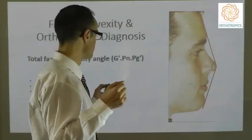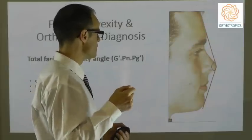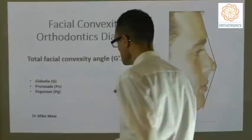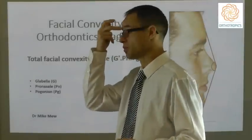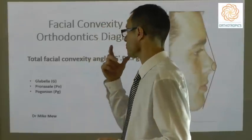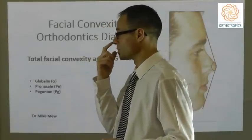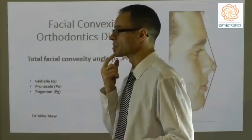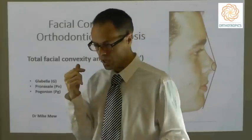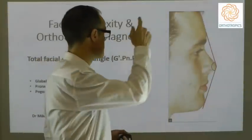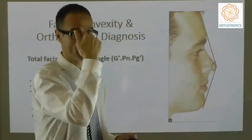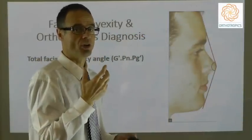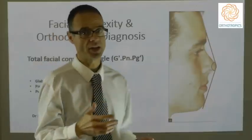Here we have the total facial convexity, and this is made by three points. Those points are glabella, up on the forehead; pronasale, on the tip of the nose; and pogonion, on the front tip of the chin. By drawing lines between these three points, we get an assessment of what is called the total facial convexity.